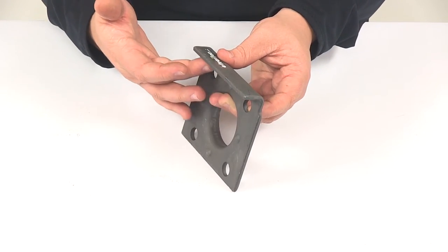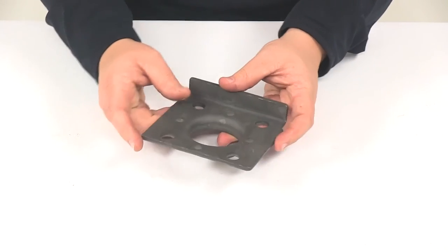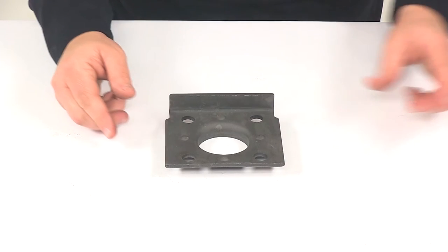This piece right here is the weld-on piece. Now this is a steel construction. It's a raw steel design, so there's not much prep work for actually welding it onto the frame of your trailer.